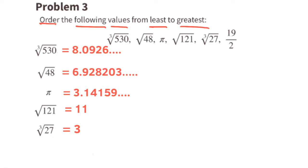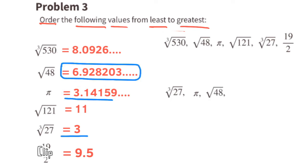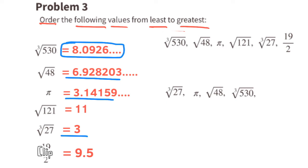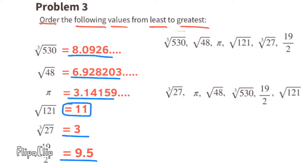The cube root of 27 is 3, and 19 halves (19 divided by 2) is 9.5. The smallest value is the cube root of 27, with a value of 3. Next is pi at approximately 3.14159. Then the square root of 48, just under 7. Then the cube root of 530, just over 8. Then 19 halves at 9.5, and finally the square root of 121, which equals 11.